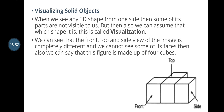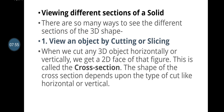Visualizing solid objects: when we see any 3D shape from one side, some of its parts are not visible, but we can still identify the shape — this is called visualization. The front, top, and side views of an image are completely different. Even if we cannot see some faces, we can still say a figure is made up of, for example, 4 cubes joined together.